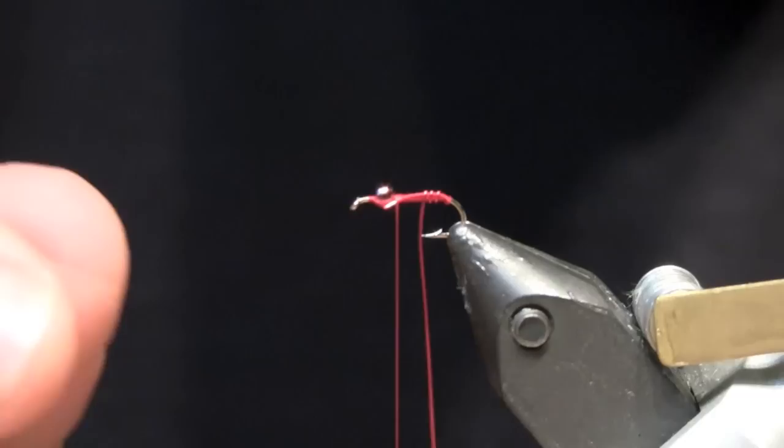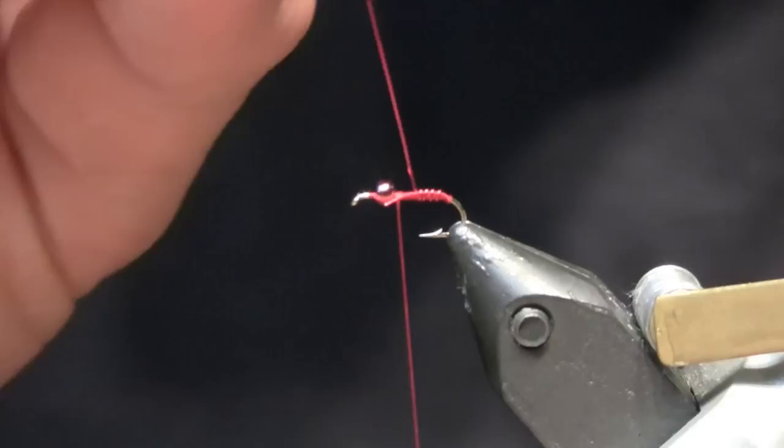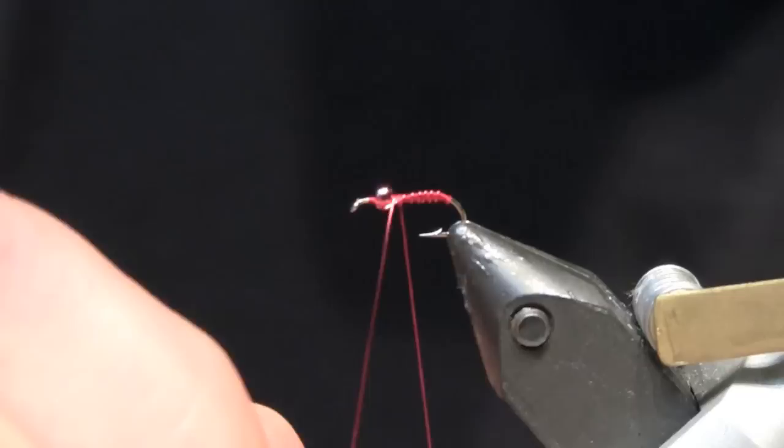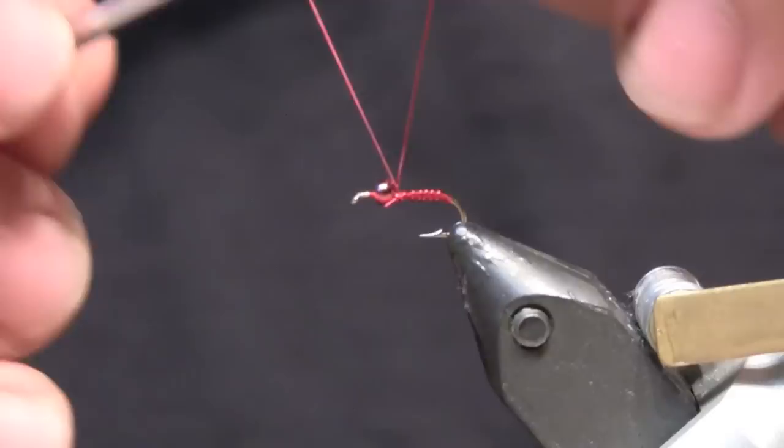I usually add a slight angle to the wraps of the wire just for looks but I don't think the fish care which way the wire is wrapped. As long as you've got that little bit of shine in there. I'll do a couple wraps right behind the bead and then tie it off.